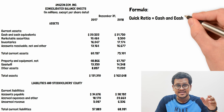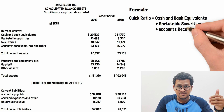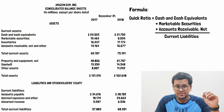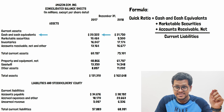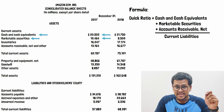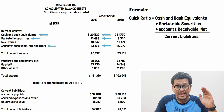We will add cash and cash equivalents, then short-term investments or marketable securities, then net accounts receivable, and divide by total current liabilities. In the current asset section, cash and cash equivalents amount to 20,522, marketable securities amount to 10,464. We are not including inventories as they are not quick assets. Net accounts receivable amounts to 13,164 million. Adding these three items gives us 44,150 million — that is the quick assets of Amazon.com for 2017.